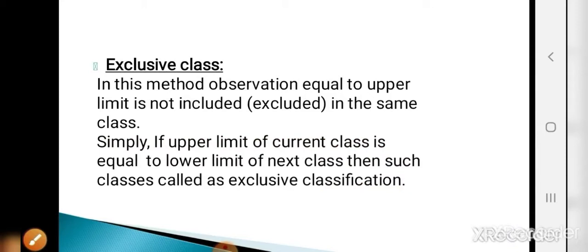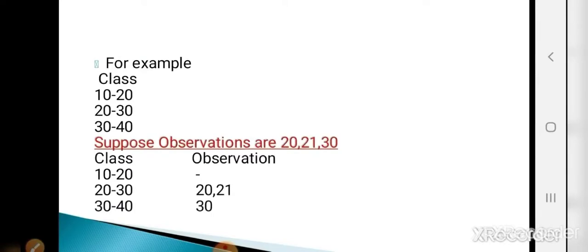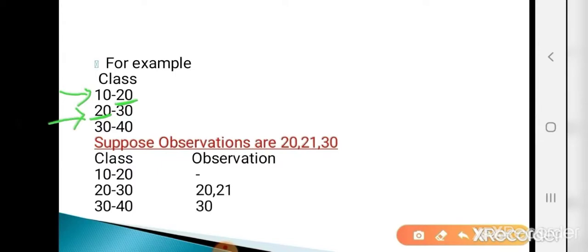Now the next is exclusive classification. In this method, an observation equal to the upper limit is not included in the same class. If the upper limit of the current class is equal to the lower limit of the next class, such classes are called exclusive classes or exclusive classification. Classes are 10 to 20, 20 to 30, 30 to 40. Here upper limit of current class equals the lower limit of the next class, so it is exclusive.